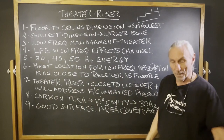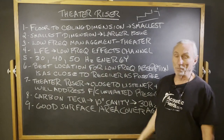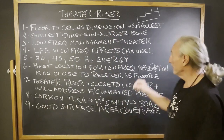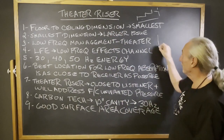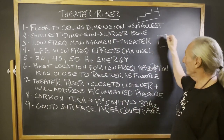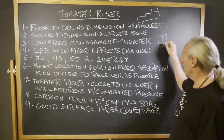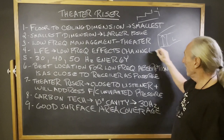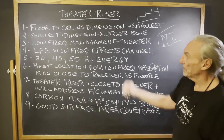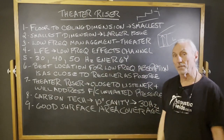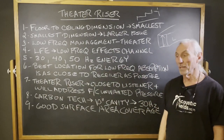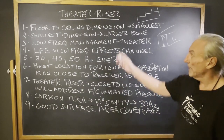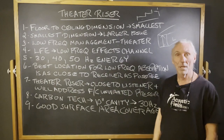So why is this important? Because the floor-to-ceiling dimension is the smallest dimension of all three. Usually we have a lot more length and a lot more width, but the ceiling height is almost always the smallest dimension — 98% of the time. So it creates the most low frequency problems.